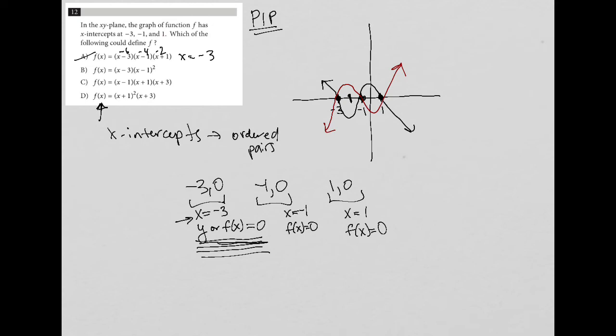How about for B? When X is negative 3, this becomes negative 6. When X is negative 3 here, this becomes negative 4. But negative 4 squared turns into a positive 16. And again, that also does not give me a 0. How about for choice C? If I put negative 3 here, this becomes negative 4. This becomes negative 2. This becomes 0. So that actually does work.